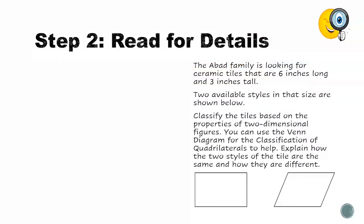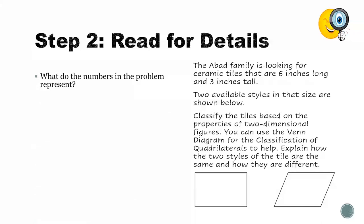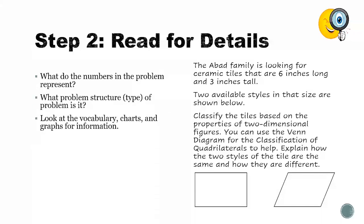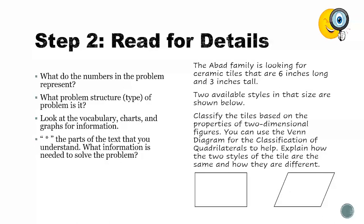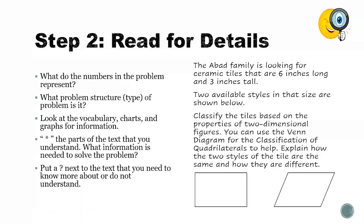Now, we are going to read a second time. This time, we are reading for details. While we are reading, we should think about: what do the numbers represent? What type of problem is this? Is there vocabulary, charts, or graphs that might give me more information? I can also put stars next to information I understand, and question marks next to information I may need to know more about.